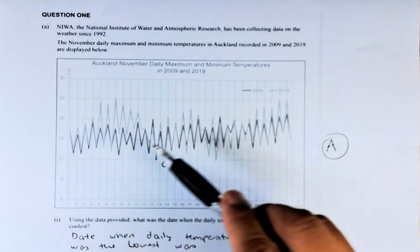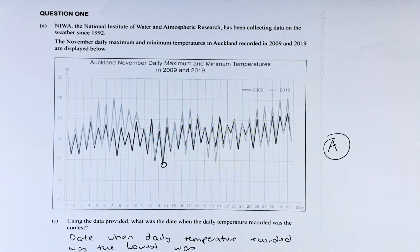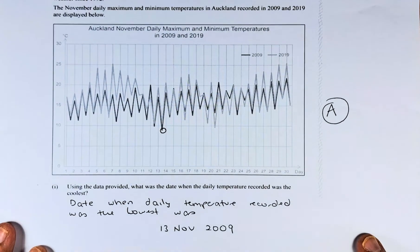The dark line is 2009 and the lighter line is 2019. I'm going to move up a bit so we can read the question.